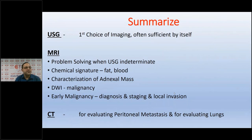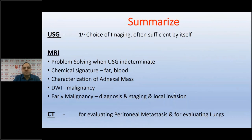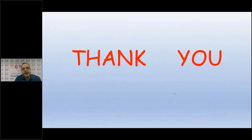Summary: Ultrasound is the first choice of imaging, often sufficient by itself. MRI is a problem-solving tool when ultrasound is indeterminate — it has a typical chemical signature identifying fat, blood, or mucin; DWI can suggest atypical features and early malignancy; MRI is the modality of choice for local invasion staging. CT scan is best for evaluating peritoneal metastasis and lungs.